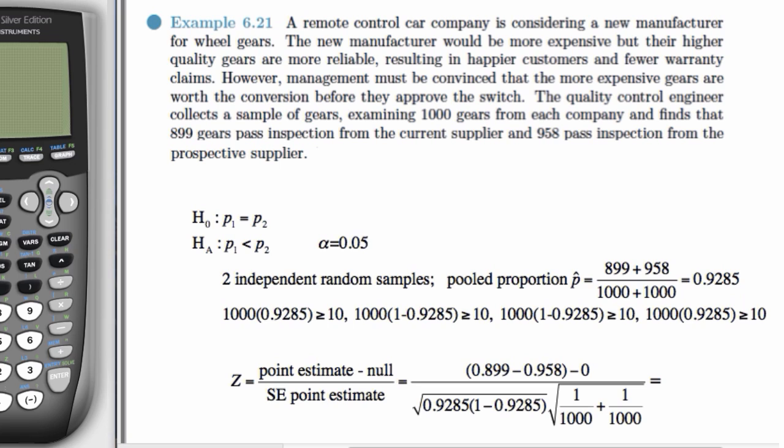Just to summarize the problem, we have a current supplier and a prospective supplier. And we want to know is there evidence that the prospective supplier has a higher rate of passing the inspection? Because if they do, we're going to go with them.